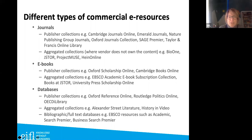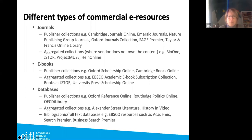For ebooks, similarly you have publisher collections like Oxford Scholarship Online and Cambridge, and then aggregated collections containing books from many different publishers — including smaller university presses that don't have their own platform, which you can only access through aggregators like University Press Scholarship Online.